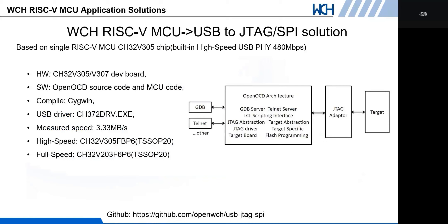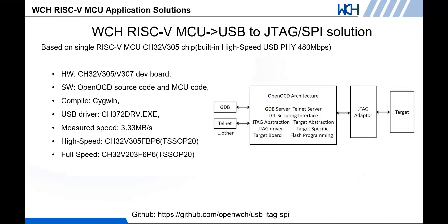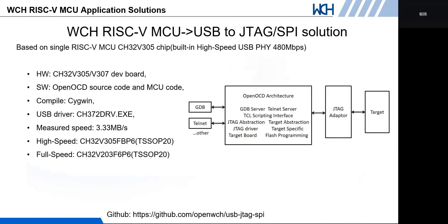The fourth solution is USB to JTAG/SPI, based on the RISC-V MCU V305. The V305 chip has built-in high-speed USB. This high-speed USB to JTAG/SPI solution can be used to debug and program devices such as CPU, DSP, FPGA, and CPLD. This solution only needs one chip and does not need CPLD or other USB bridge chips. This project is also open-sourced on GitHub.